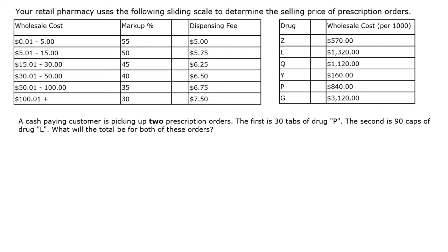This question gives you a ton of information and then asks you a specific problem to solve. You're working at a retail pharmacy that uses a sliding scale to determine the selling price of prescription orders. This sliding scale is based on the wholesale cost of the drug, with a markup percentage and a dispensing fee both based on that wholesale cost. A table provides different drugs and their wholesale cost per 1,000 units — it's very important to understand that the cost is per 1,000 units, not cost per unit.